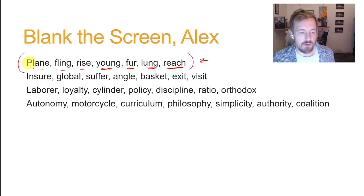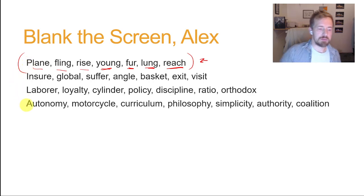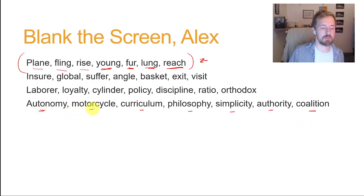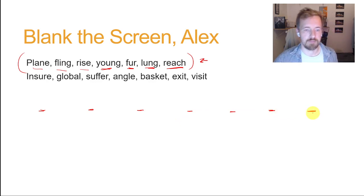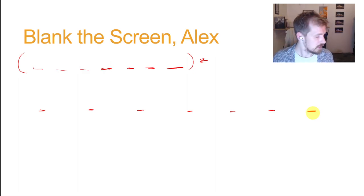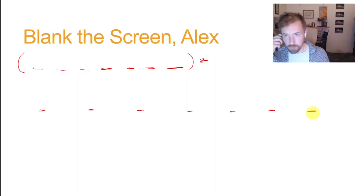Now I'm going to read a second list. Autonomy, motorcycle, curriculum, philosophy, simplicity, authority, coalition. One more time: autonomy, motorcycle, curriculum, philosophy, simplicity, authority, coalition. Count down from 10 again: 10, 9, 8, 7, 6, 5, 4, 3, 2, 1.